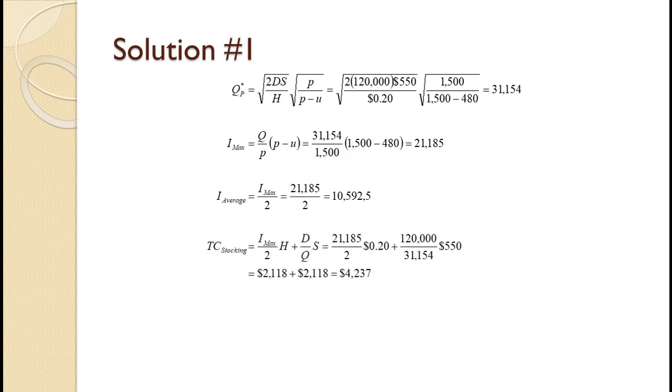Plugging in the maximum inventory of 21,185, holding cost of 20 cents, annual demand of 120,000, order quantity of 31,154, and order cost of $550 gives us a total annual stocking cost of $4,237. Notice that the total annual holding cost equals total annual order cost.